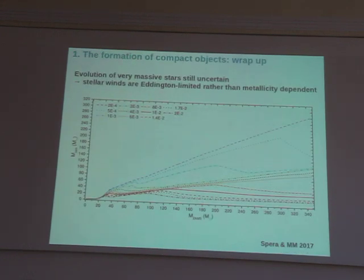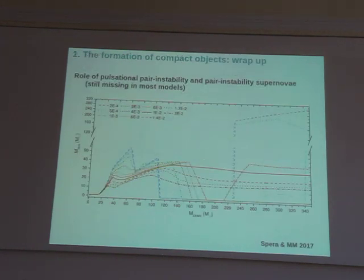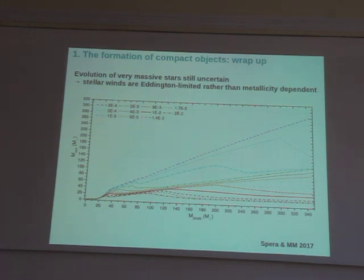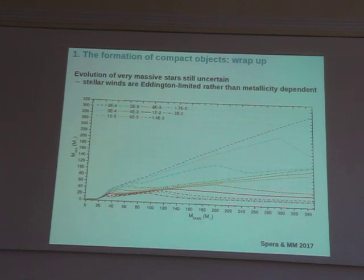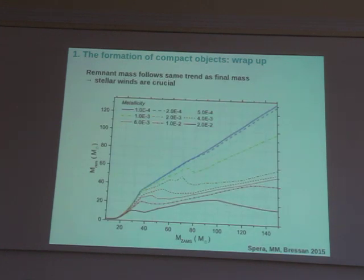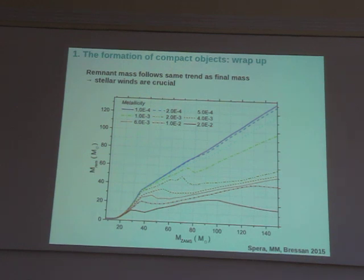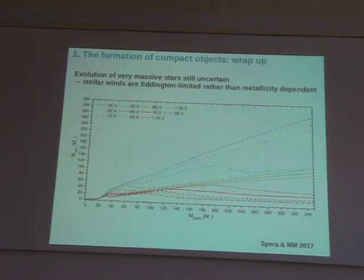There is one more ingredient we have not discussed yet: we have discussed pair instability and pulsational pair instability supernovae theoretically, but not their impact on the mass of the compact objects. In the previous plots I discussed the impact of stellar evolution and core collapse supernovae on compact objects. To appreciate the importance of pair instability and pulsational pair instability supernovae, we have to go to larger stellar masses.